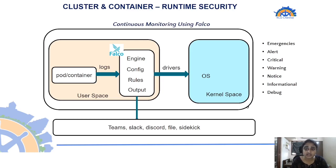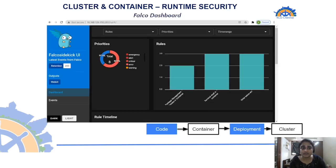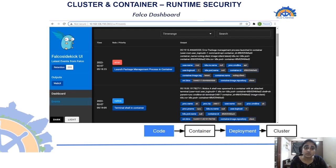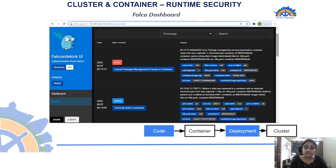Falco alert severities range from emergency and critical down to notice, informational, and debug. Falco alerts can be integrated with platforms like Microsoft Teams, Slack, and Discord. Falco also comes with a UI called Falco Sidekick, which shows which rules have been violated in a given time range, the events that caused violations, the user, and the namespace — giving you complete visualization of all security activity.